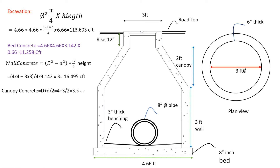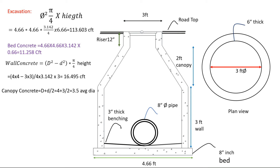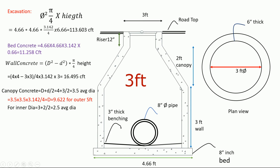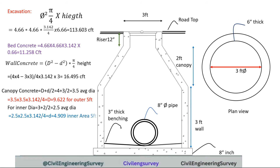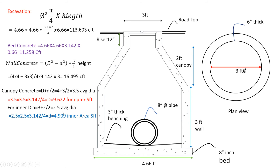We calculate the canopy concrete using the top diameter plus 3, which is the inner diameter, divided by 2 — giving a main value of 3.5 feet diameter. We put this value using the above formula, giving 9.622 square feet for the outer area. In another method to easily calculate: the outer core area of the whole circle minus the inner area. We put the values — 3 feet inner and 2 feet — giving main value 2.5. Using the formula above this gives 4.909 for the inner area. We subtract both areas and multiply by height.